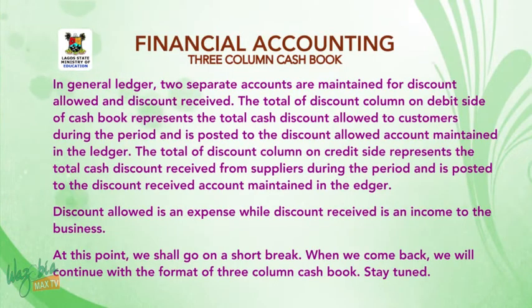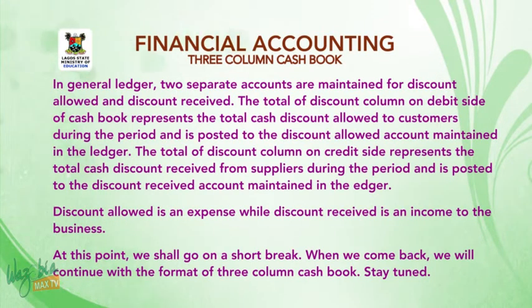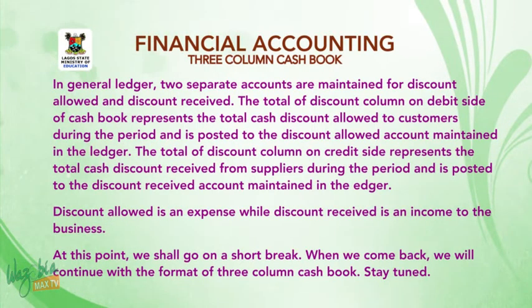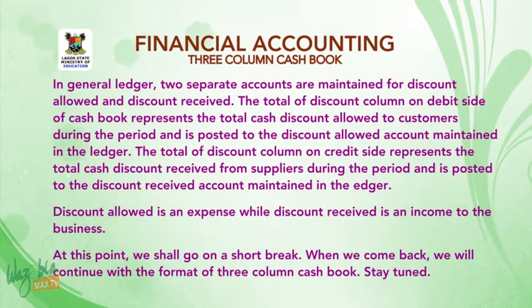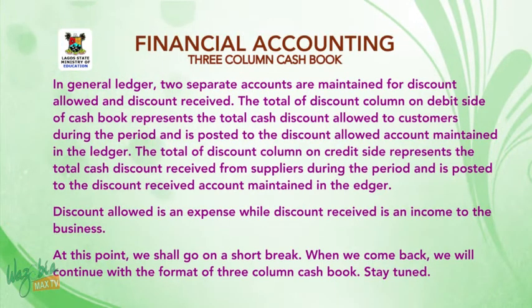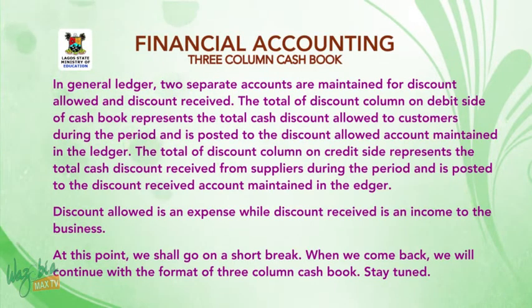The discount column is only totaled. It is not balanced because it does not work as an account. In the general ledger, two separate accounts are maintained for discount allowed and discount received. The total of the discount column on the debit side represents the total cash discount allowed to customers during the period and is posted to the discount allowed account in the ledger. Discount allowed is an expense, while discount received is an income to the business.